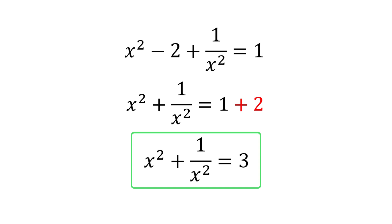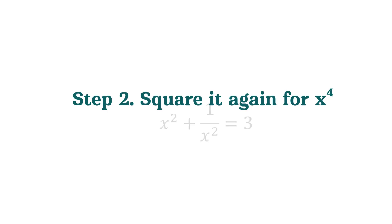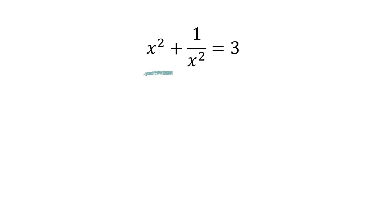And just like that, we're on the first rung of our ladder. Now, we just do the exact same thing again. We take our new equation, x squared plus 1 over x squared equals 3, and square both sides.